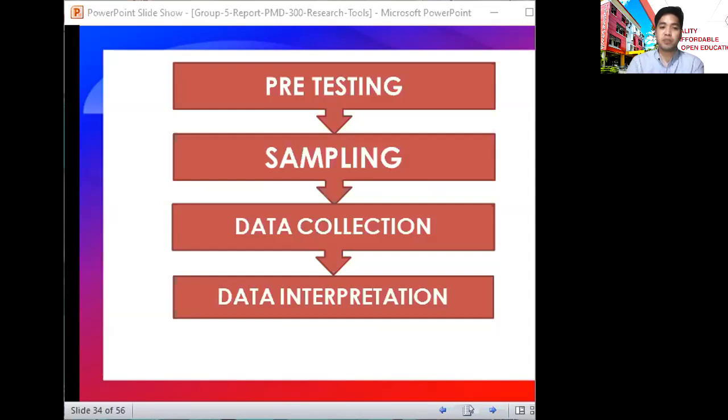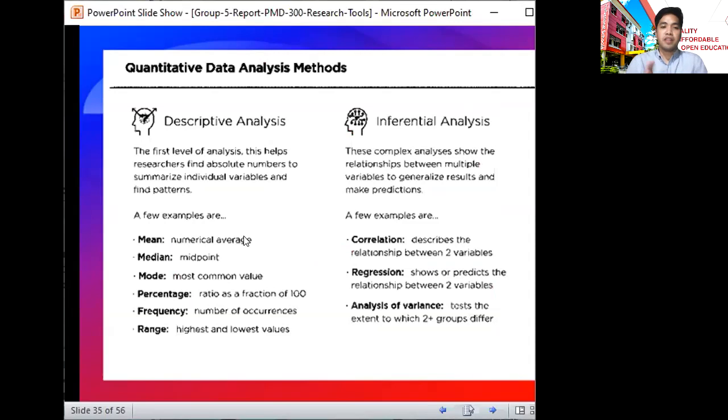And finally, the data interpretation. The research process interventions and data collection tools, example the questionnaires, are standardized to minimize or control possible bias. As you can see on the table, this provides you an overview of the quantitative data collection strategies.